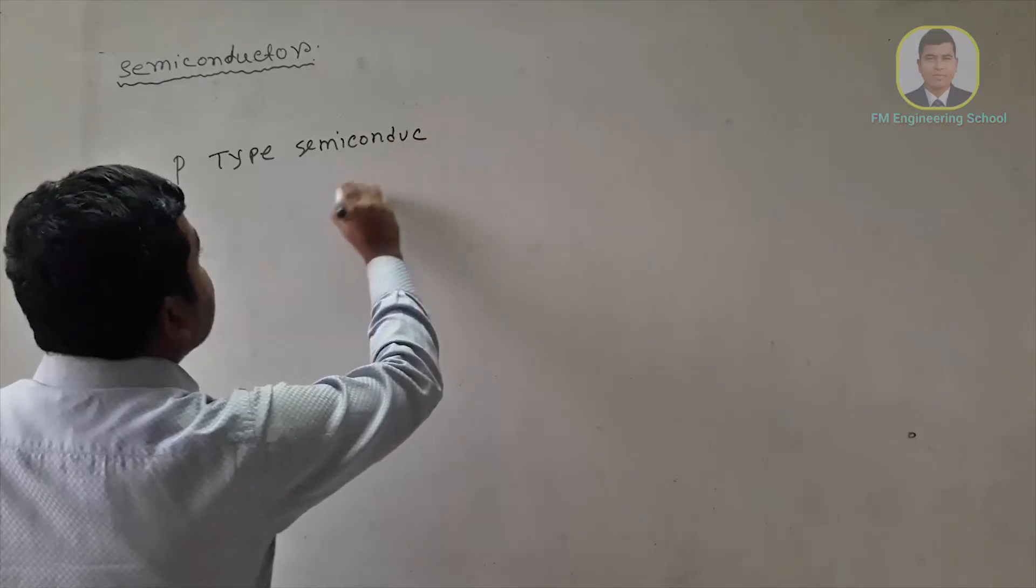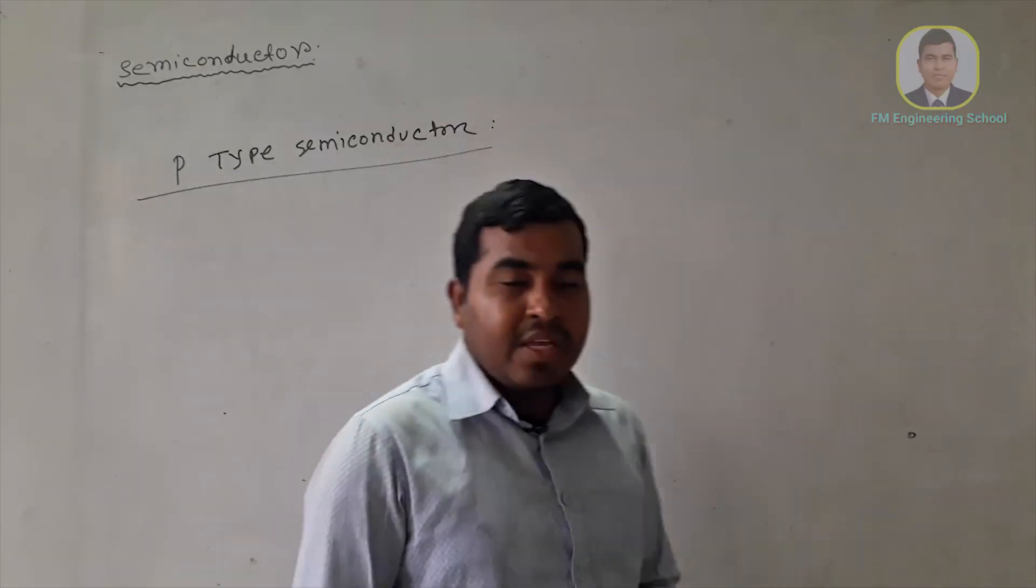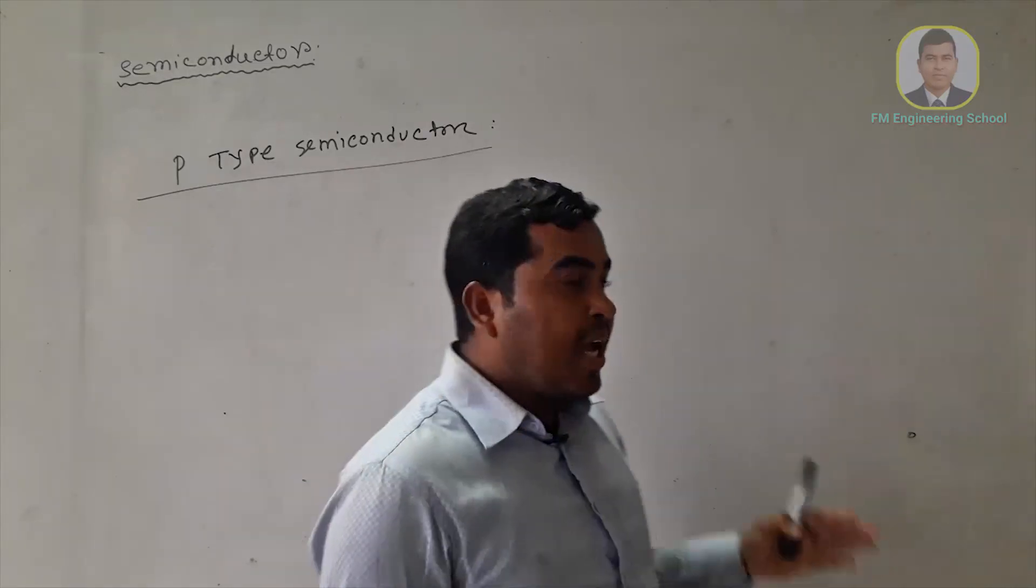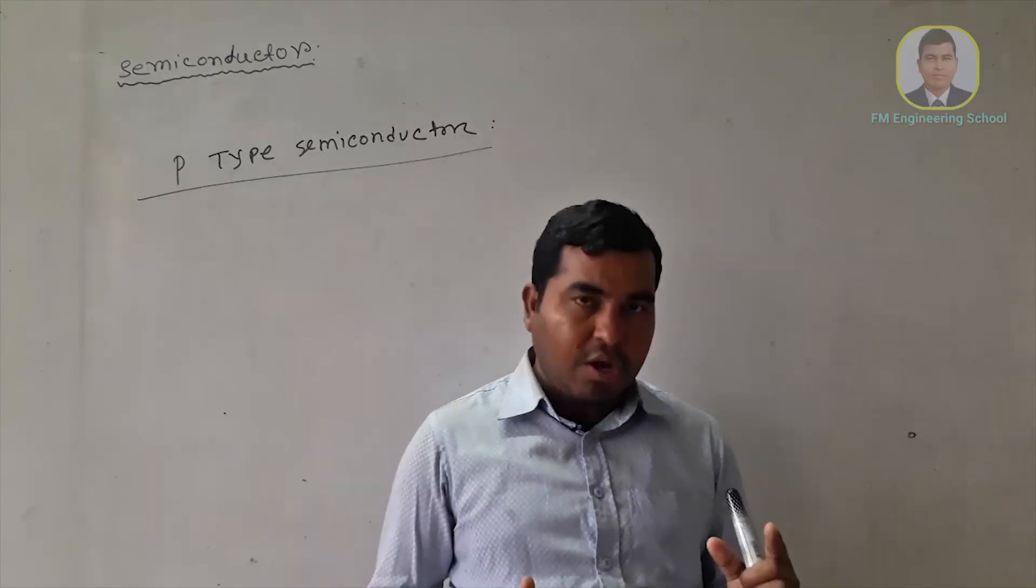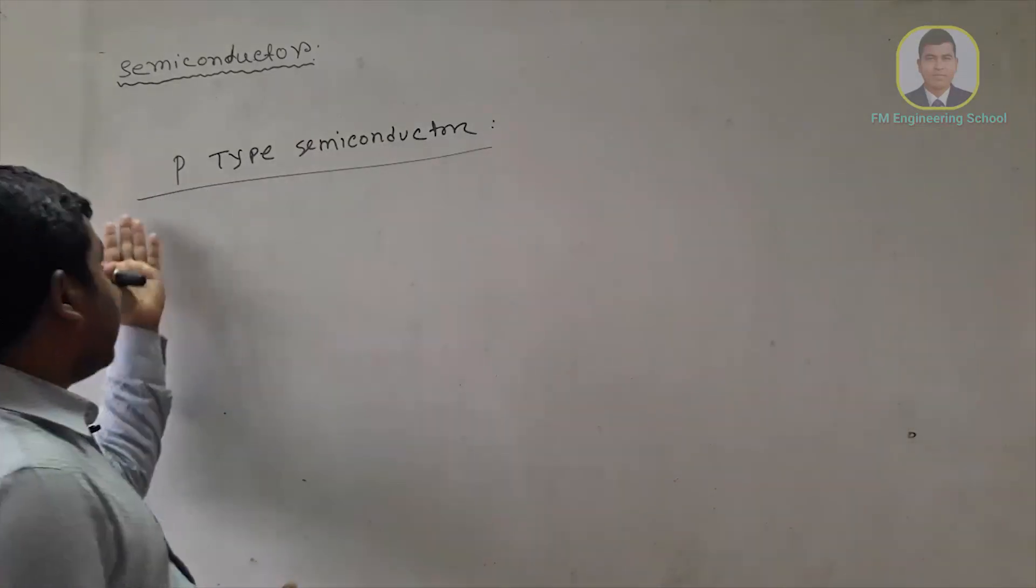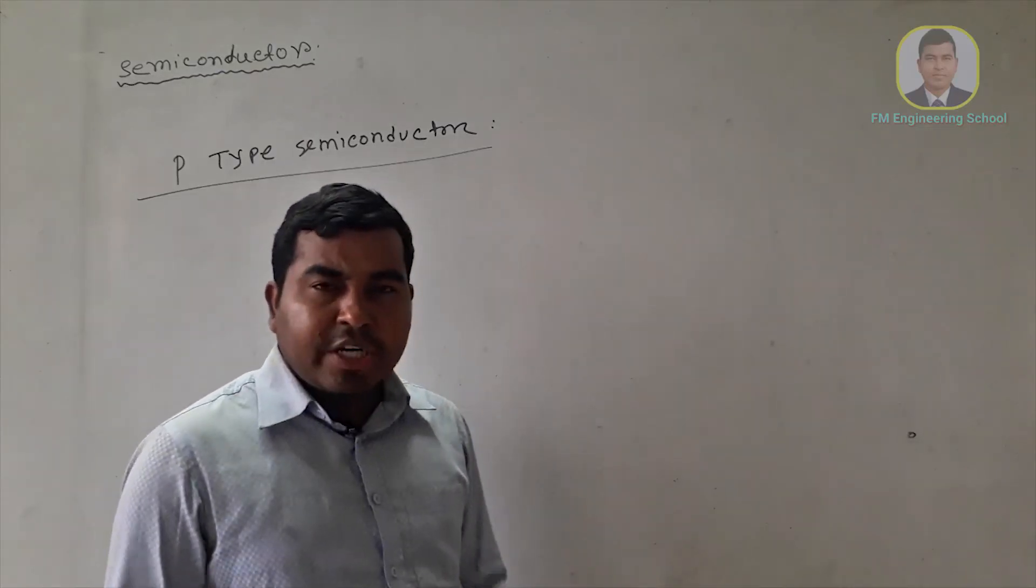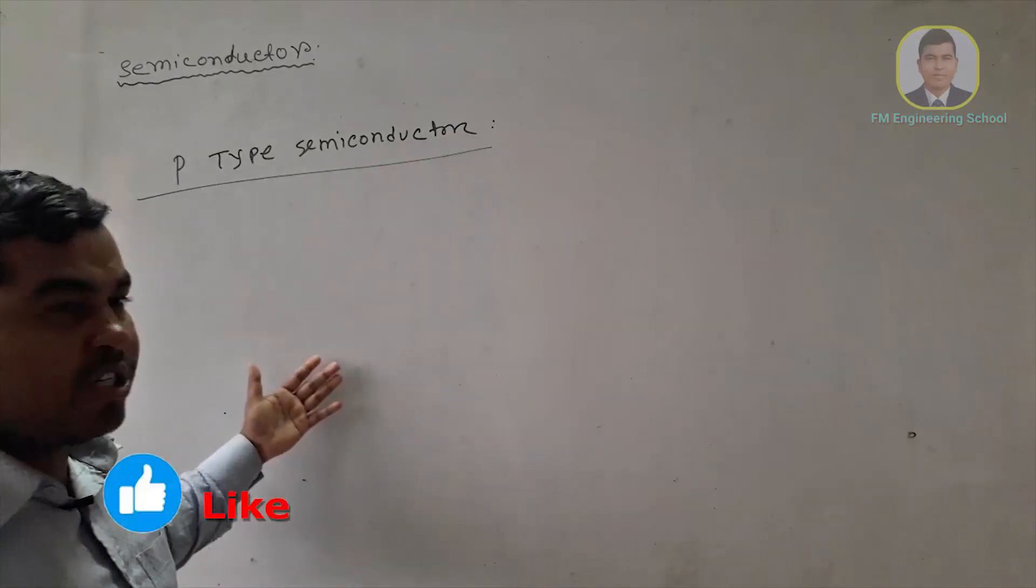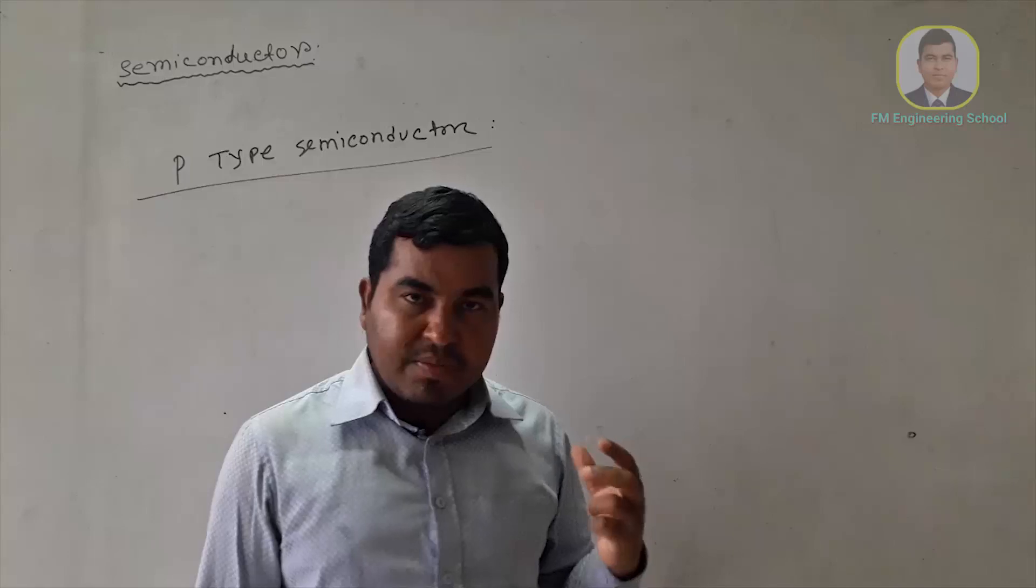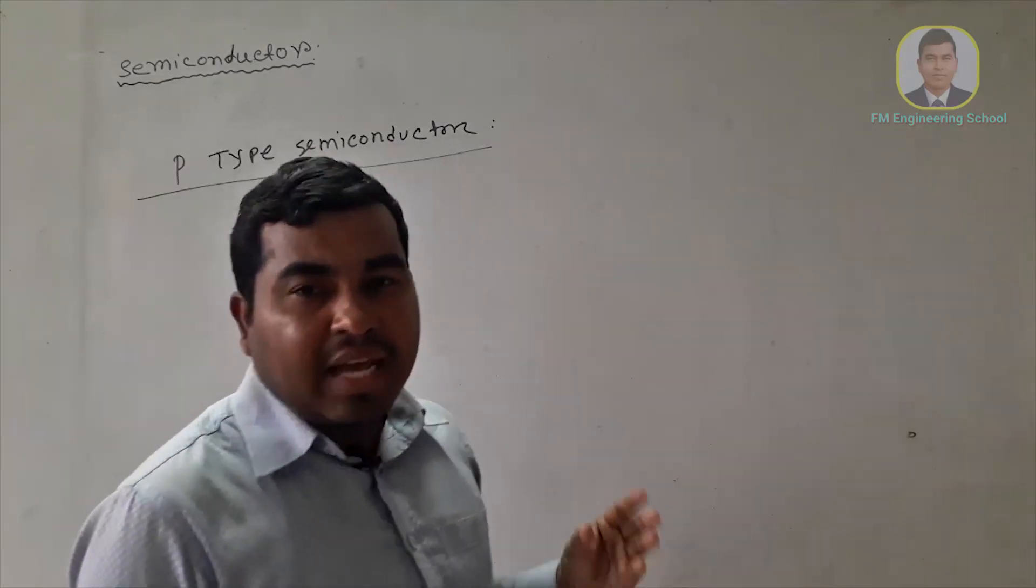So P-type semiconductor is not a P-type semiconductor. This is P-type semiconductor. You can see that P-type semiconductor. But I saw the semiconductor that is made in this product of semiconductor. Again we have P-type semiconductor. These are the trivalent elements: Indium, Gallium, and Aluminum, and we are the P-type semiconductor.